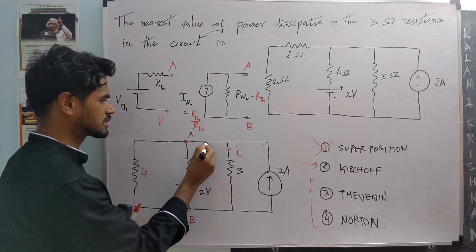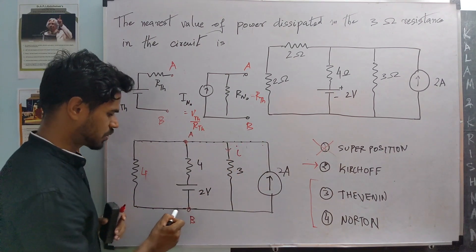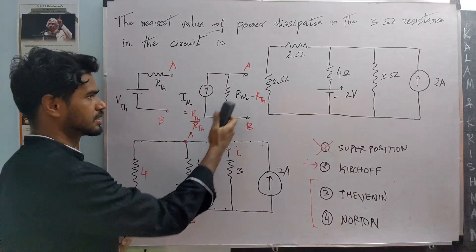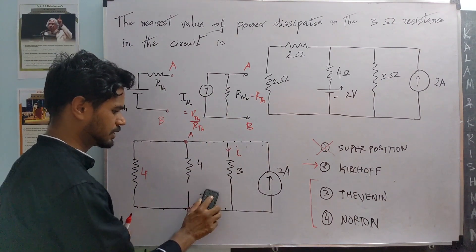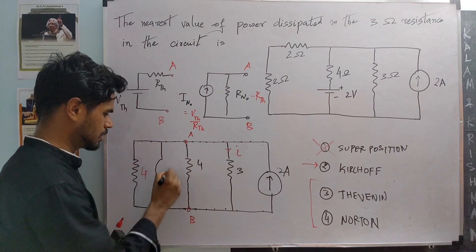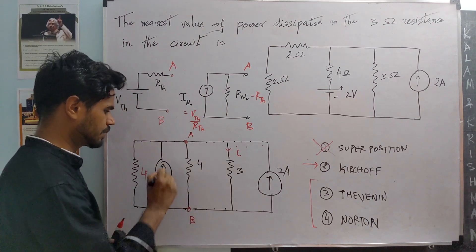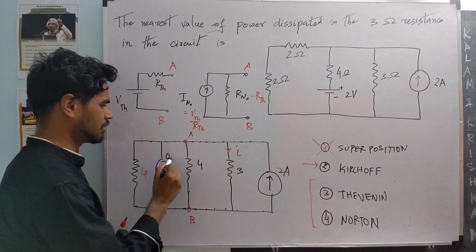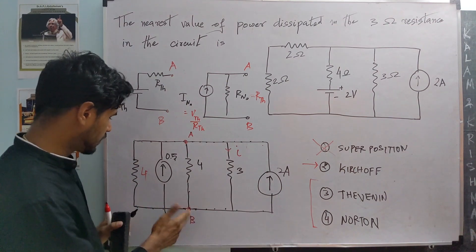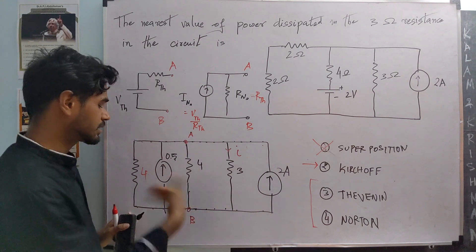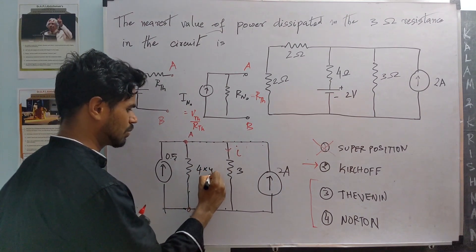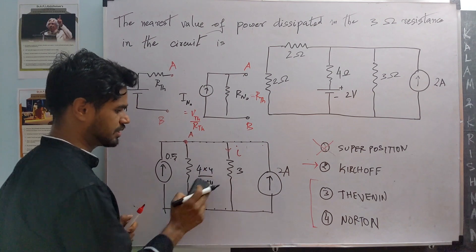So you can replace any voltage source and series resistance with an equivalent current source and parallel resistance. All the top points are node A because they are all equipotential, and all the bottom points are node B. The Norton resistance remains 4 ohms. Parallel to it we have a current source of 2 by 4 equals 0.5 amperes. Now 4 and 4 are in parallel, so we simplify: 4 times 4 divided by 4 plus 4 is 16 by 8, which is 2 ohms.